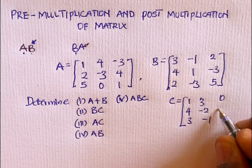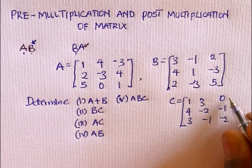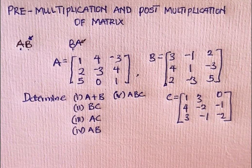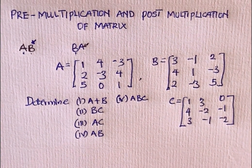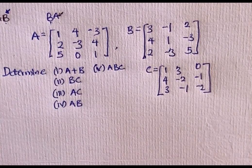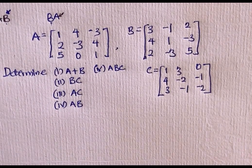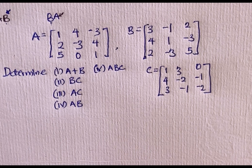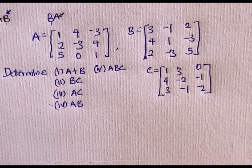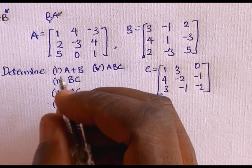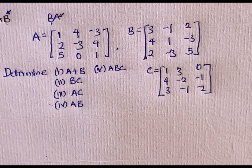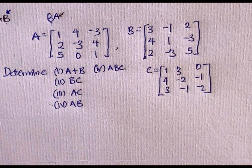Matrix C is equal to [1, 4, 3; 3, -2, -1; 0, -1, -2]. The way you are going to solve this is actually similar to multiplication of matrices. You are given matrices A, B, and C and asked to determine A plus B, A multiplied by B, multiplied by C, and so on. Let's start with the first question, A plus B.